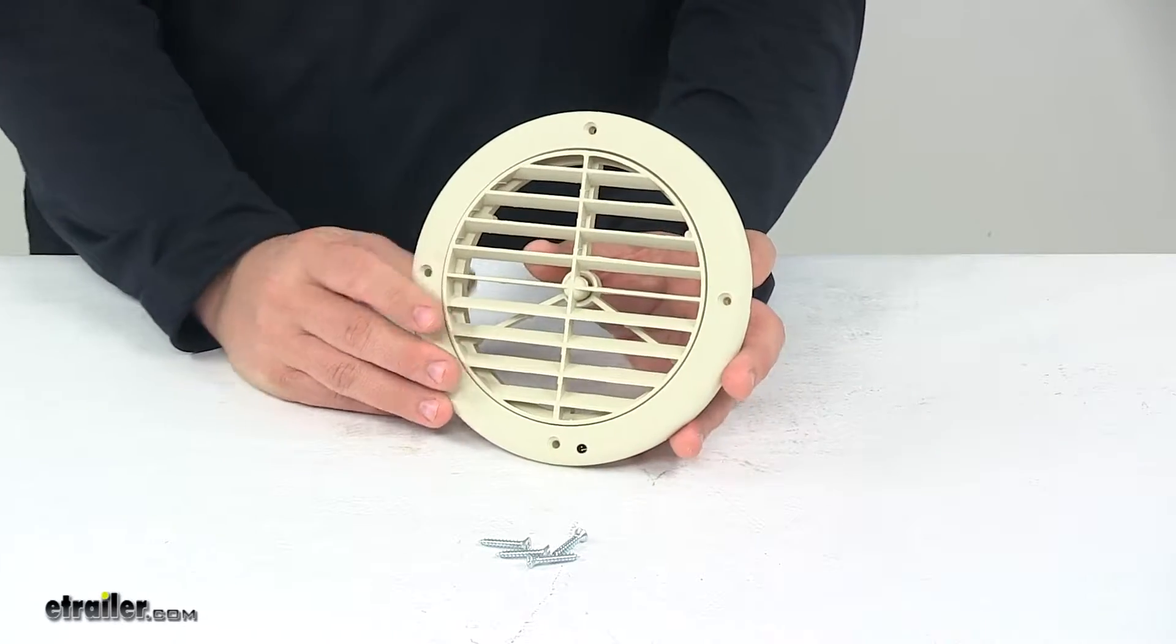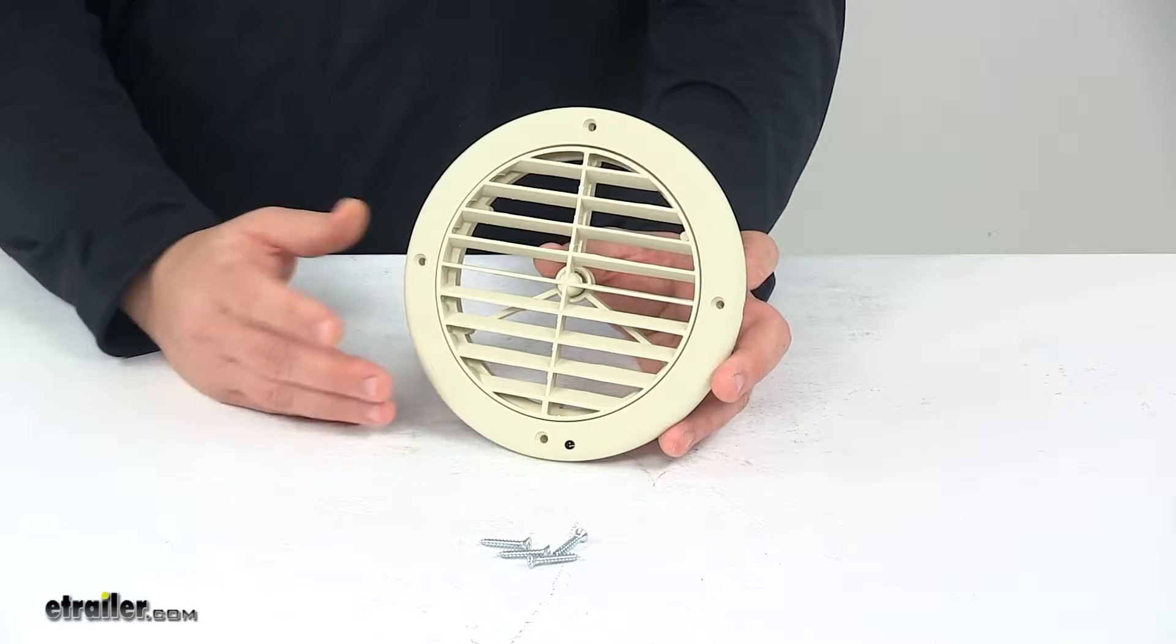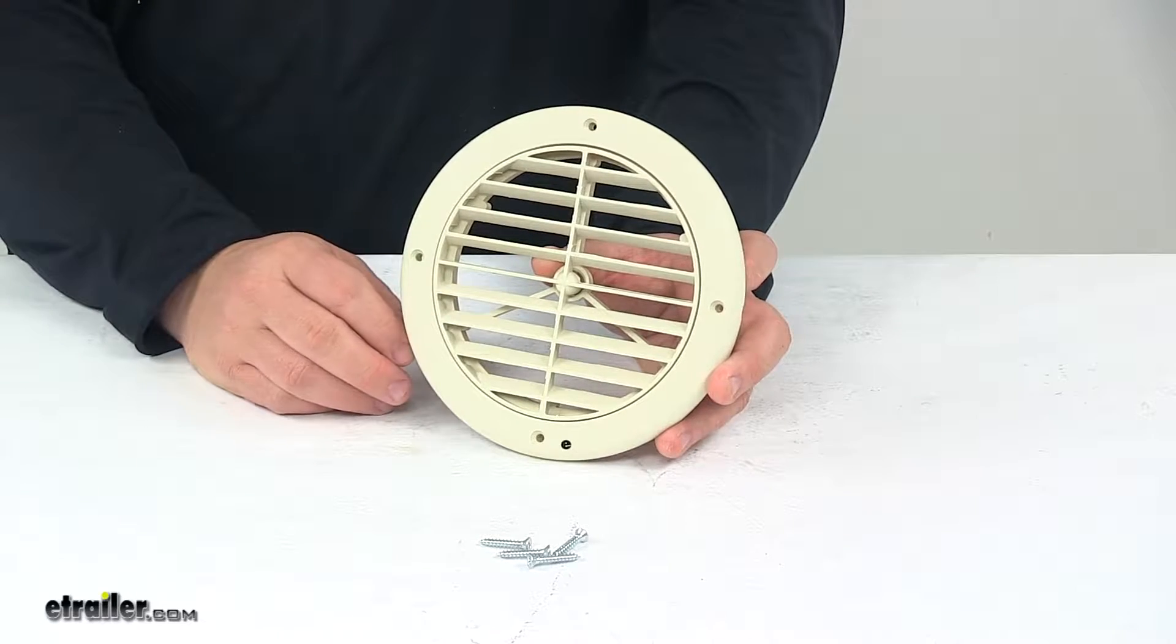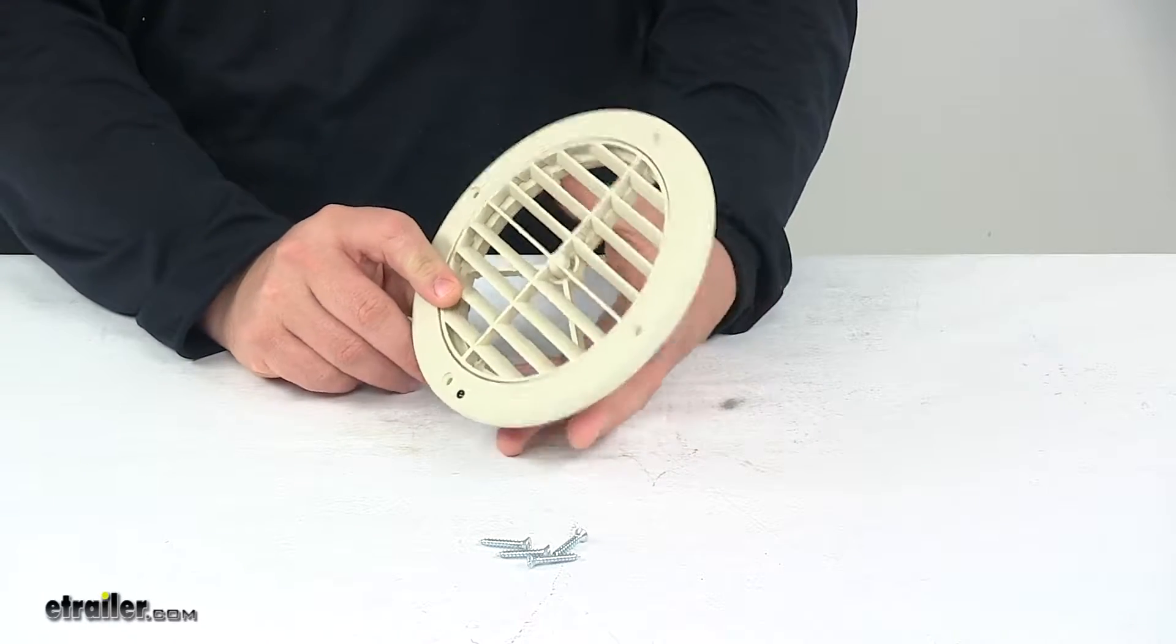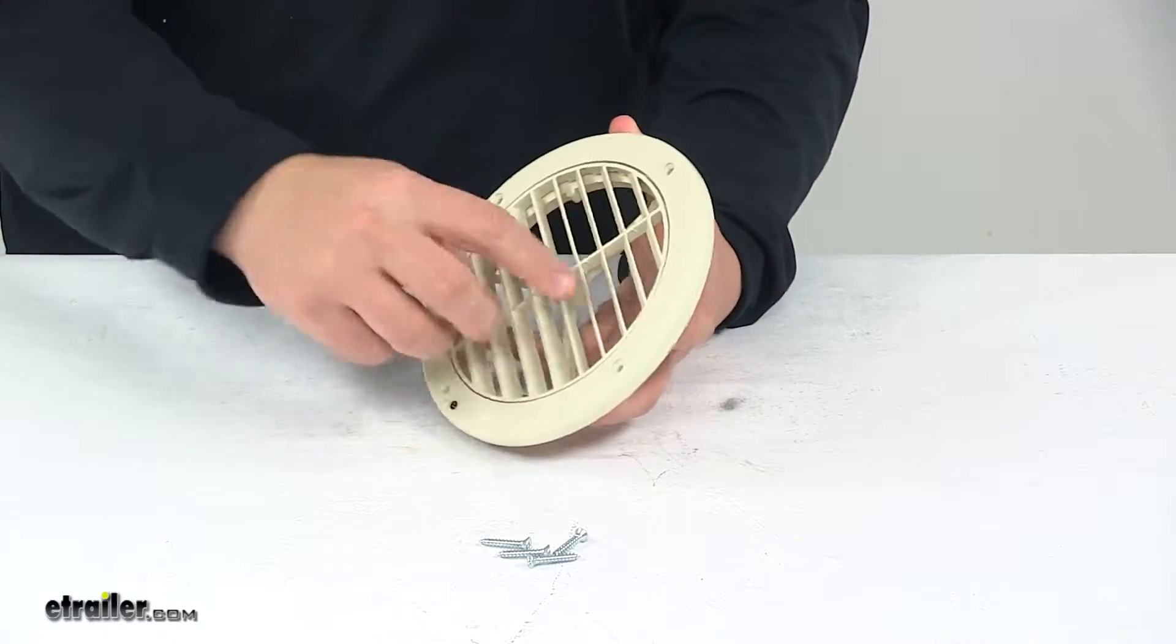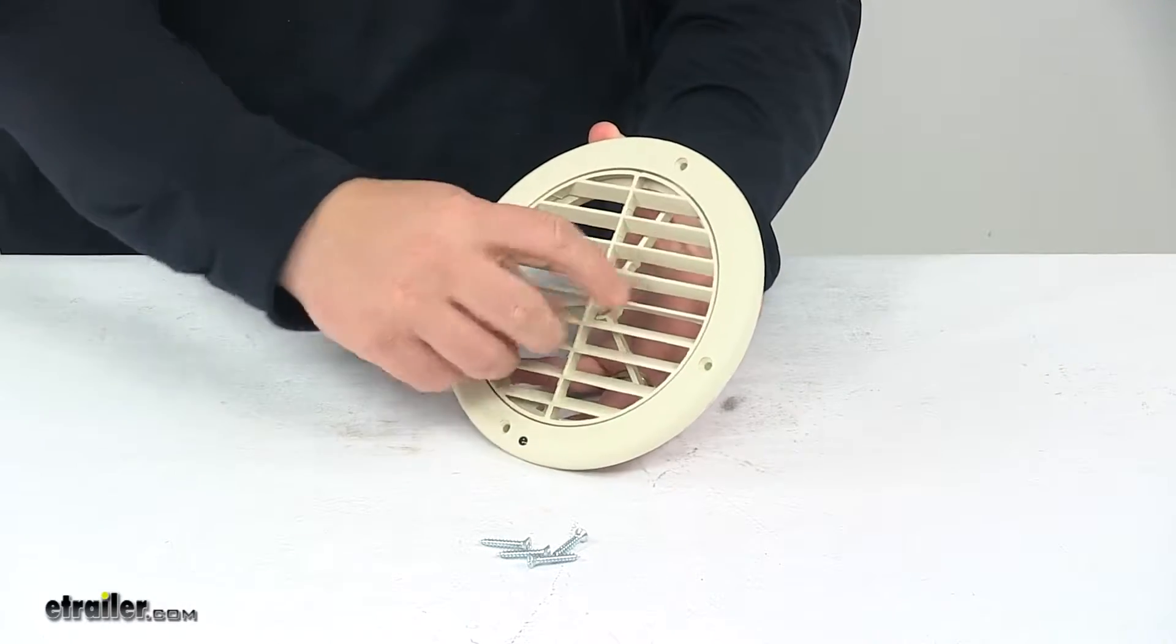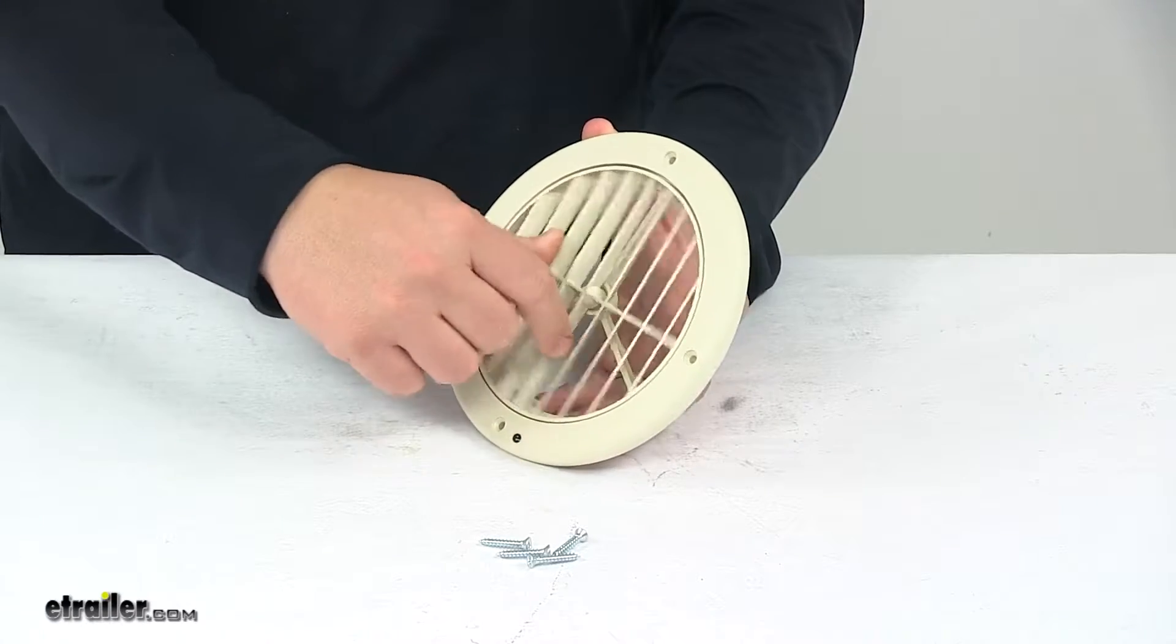The ceiling vent and register allows air to come into the RV from the duct work. This vent is very easy to operate. The vent portion rotates 360 degrees so you can direct the air to where you need it.